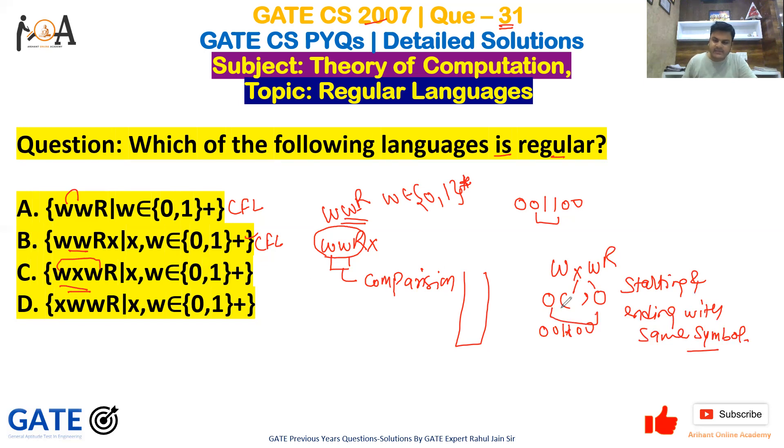If it is starting and ending with same symbol, if one is there then at last it will always be one. So with the help of that we can do it, so we will call it as a regular language.